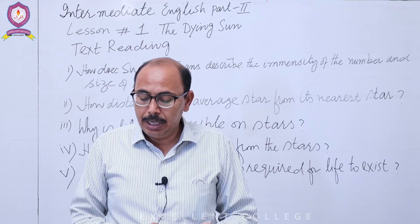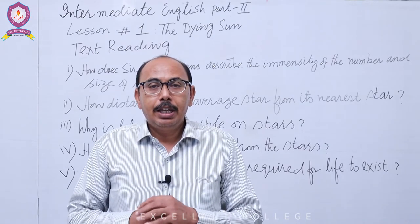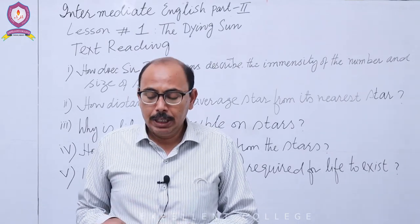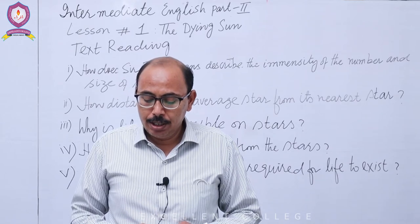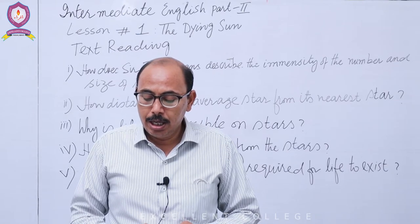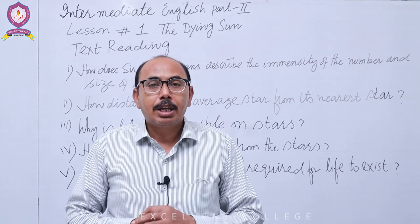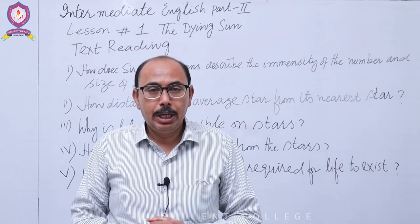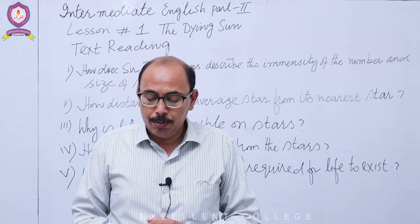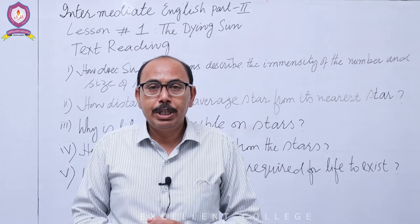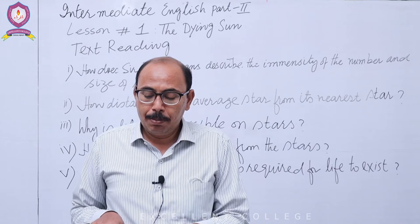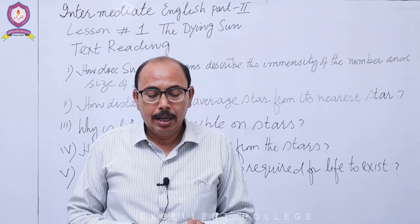اس paragraph کے حوالے سے questions: 'Write a note on the beginning of life on the earth' — زمین پر زندگی کیسے وجود میں آئی۔ پانچواں question یہ ہے کہ ستاروں پر زندگی ممکن کیوں نہیں ہے۔ ان دونوں سوالات کا جواب اس paragraph کے اندر ملے گا۔ اب تک ہم نے چار paragraphs پڑھ لیے ہیں — اب پانچویں paragraph کی طرف آتے ہیں۔